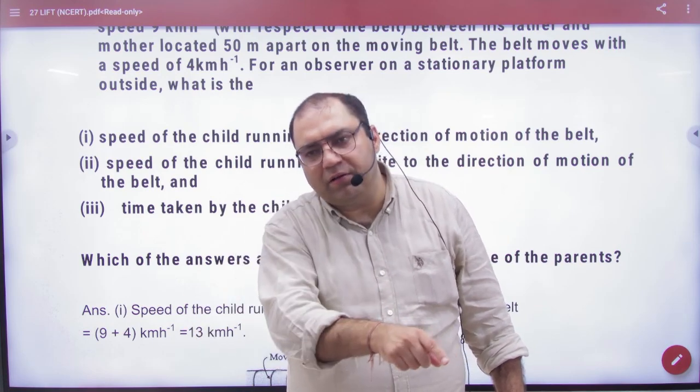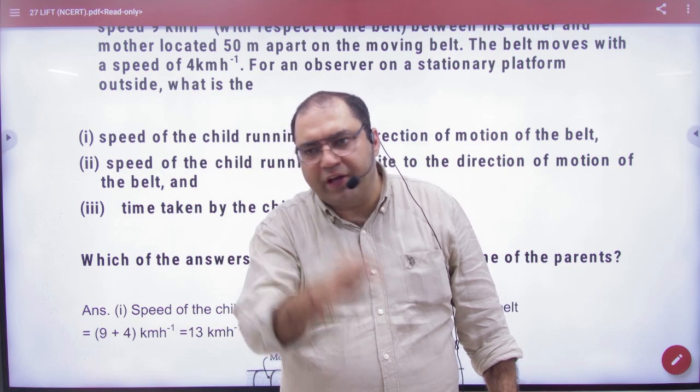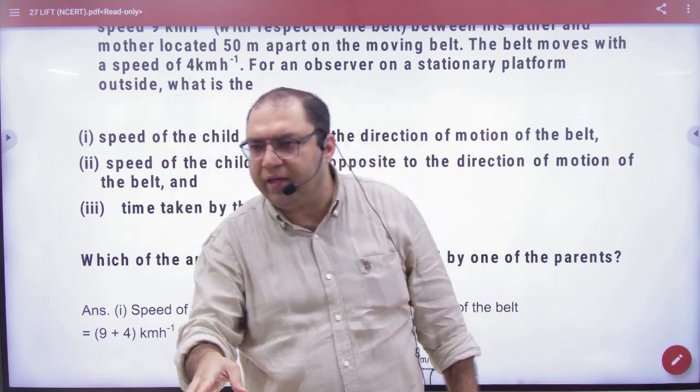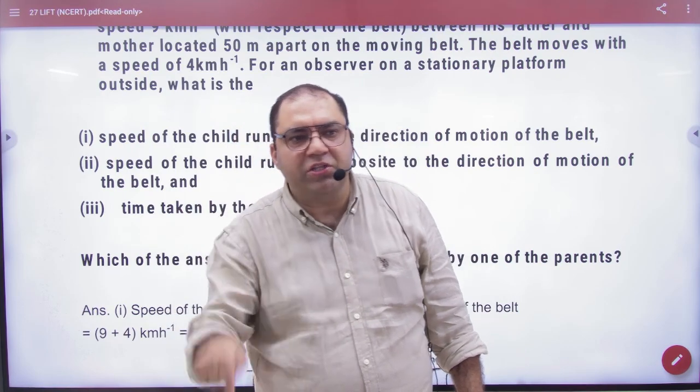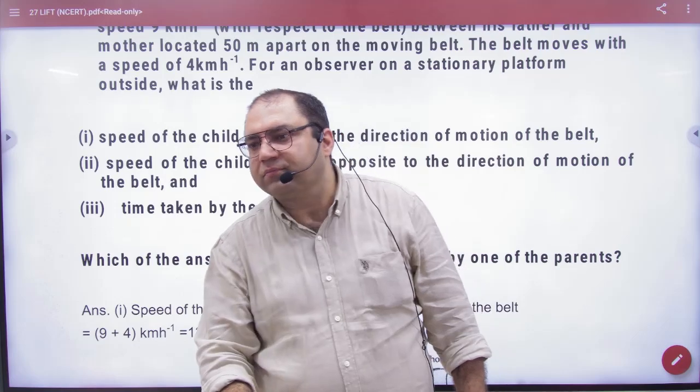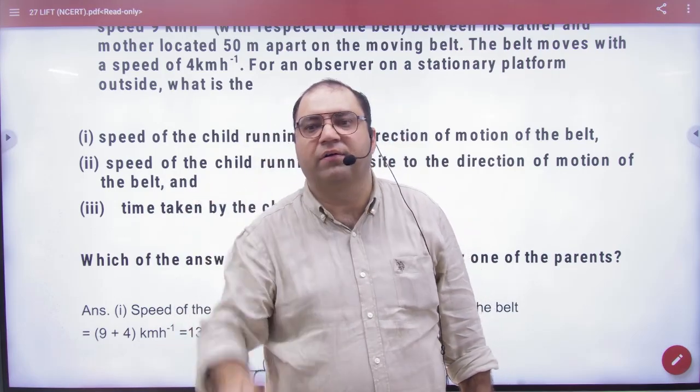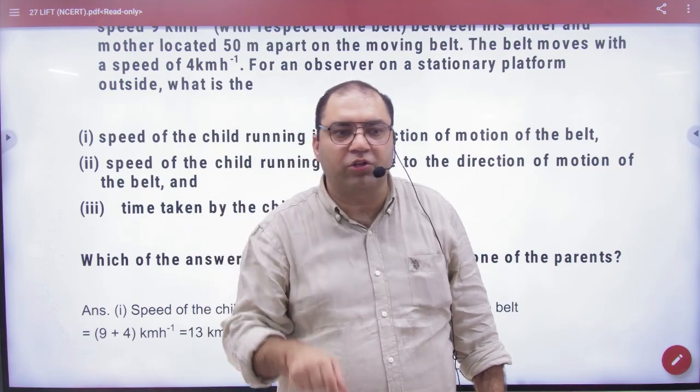So the belt speed of the child: if the child does not move, then the speed is the same as the belt. So with respect to each other, they are all at rest. So the belt doesn't matter for them. It matters for you, because you are seeing everything on the ground.